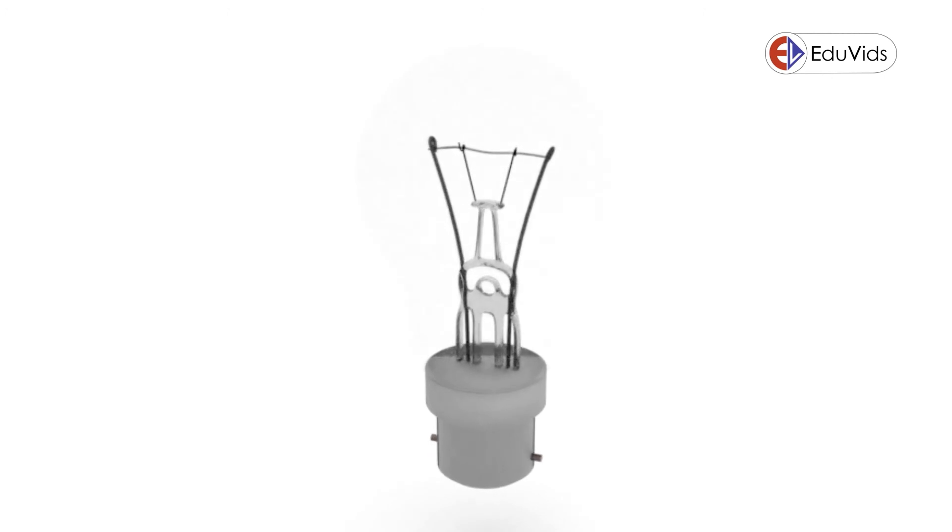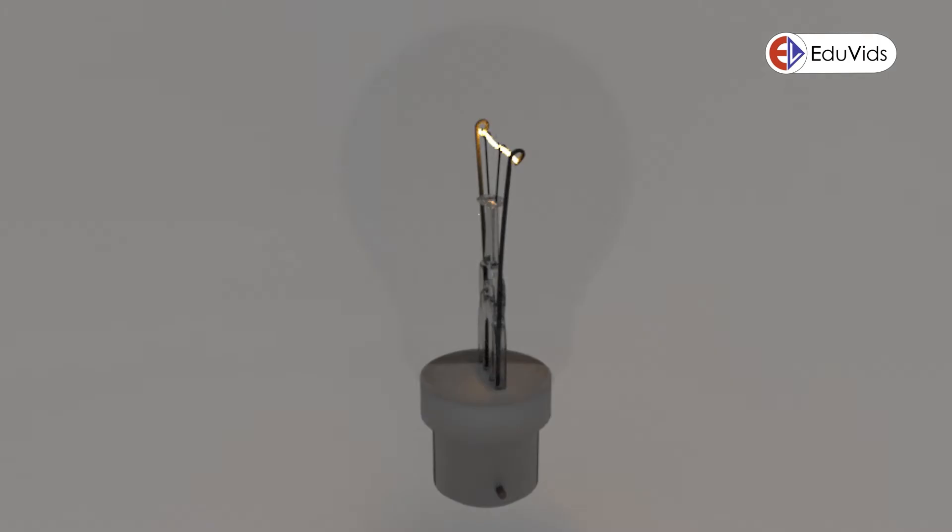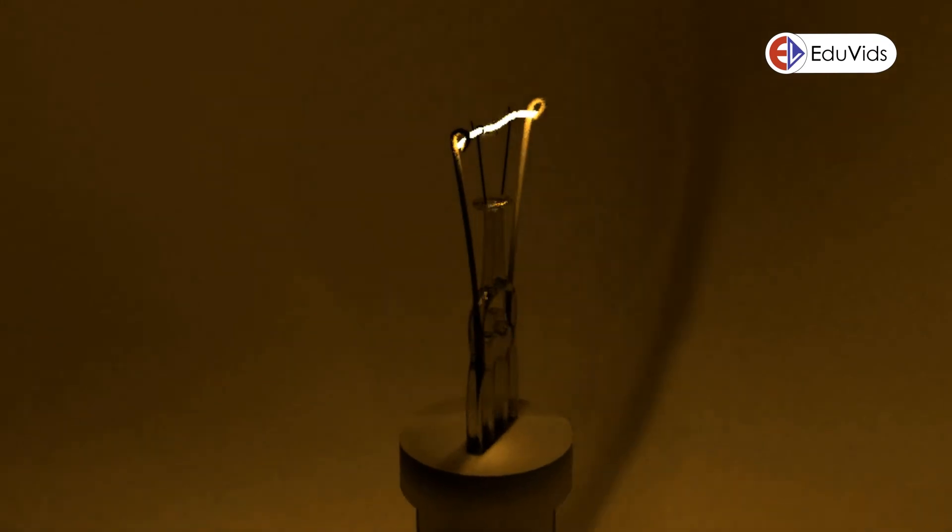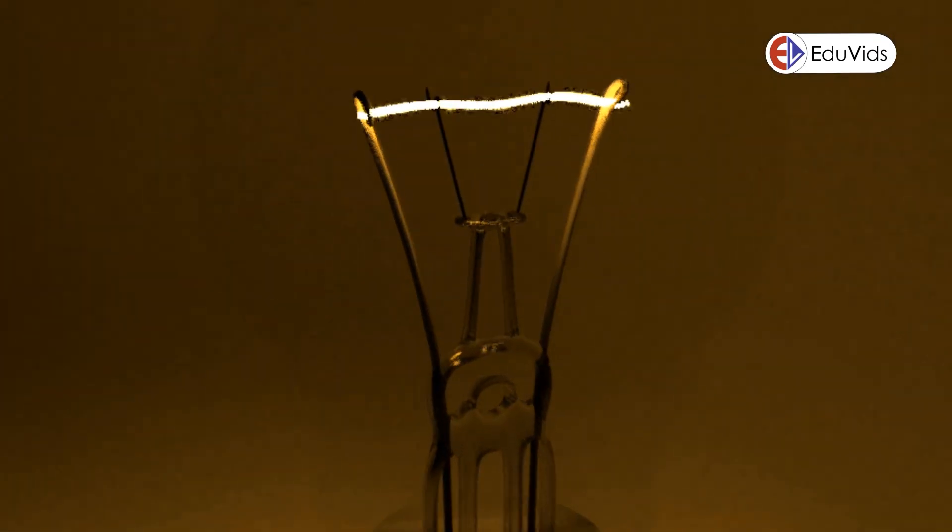Because of this high heat output, you'll see incandescent bulbs used as heating lamps, grow bulbs, and incubator lights where heat output is actually an asset.